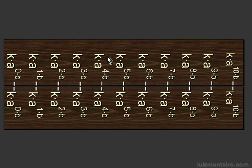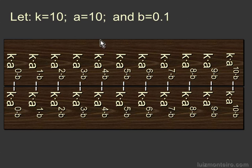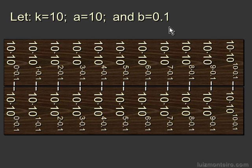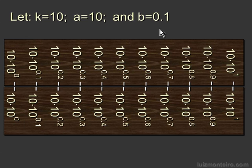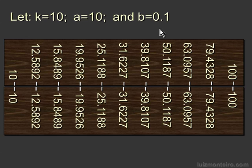Now I'm going to change it just so we can see it better. We're going to let k equals 10, a equals 10, and b equals 0.1, and you're going to see why I'm doing this pretty soon. So this is what we have. If we evaluate it, we're going to get something like this. The first one is going to be 10. At one unit from the origin, the number is going to be 12.5892, and so on. The next number is going to be 15.something, 19.something, and so on for the ruler.